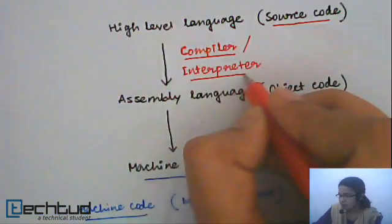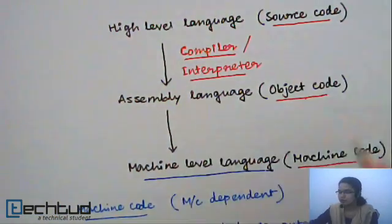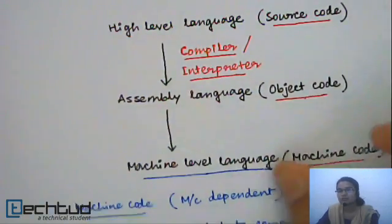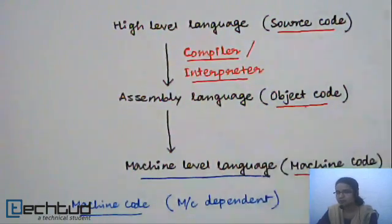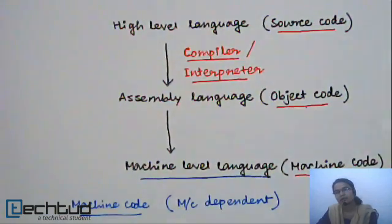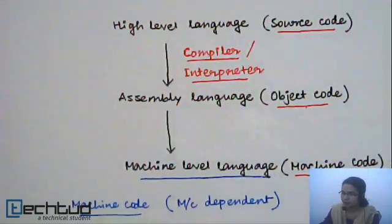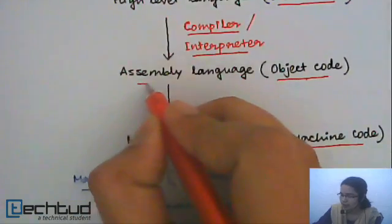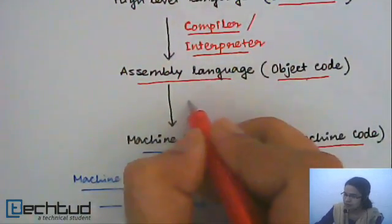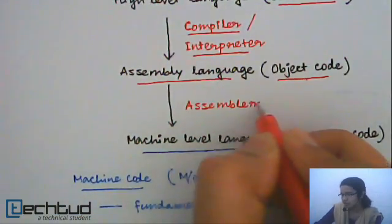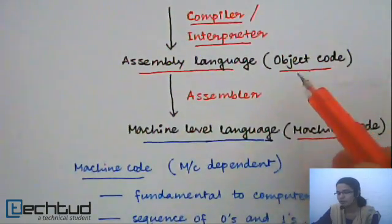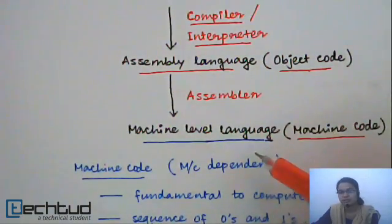An interpreter, on the other hand, takes a single line — a single instruction — from a high-level language code and converts it into a lower-level language code and directly executes it. So it does it line by line, whereas a compiler does it for the full program. After converting into an intermediate language like assembly language code, the next task is handled by the assembler. The assembler converts object code or assembly language code into machine-level language code.